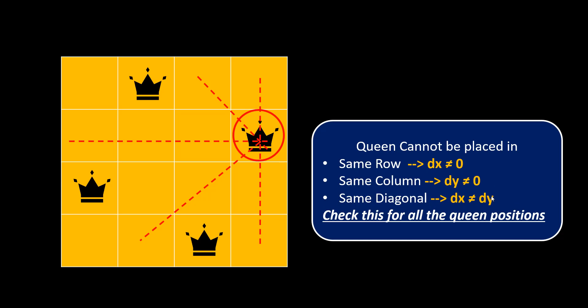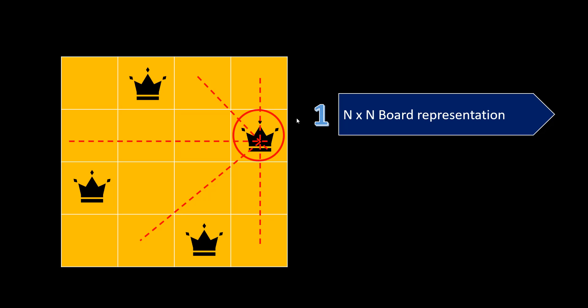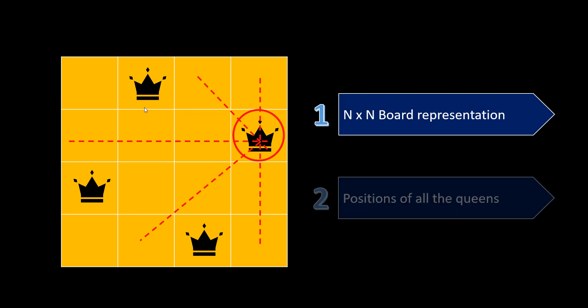Let's see what data structures we would need to solve this problem. The first one is the board — an N×N board representation. It would be a character array that is N×N, where dot represents empty and Q represents a queen. The second thing is to store the position of all the queens placed so far. For that we will need a list of all the positions, and a position will be given by x and y coordinates as an integer array.